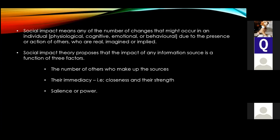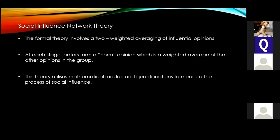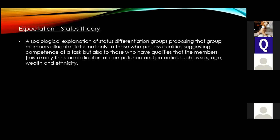Social impact theory proposes that the impact of any information source is a function of three factors: the number of others who make up the sources, the immediacy (closeness) of those sources, and the strength and salience of their power. Social influence network theory involves a two-weighted averaging of influential opinions — actors form a normal opinion that is a weighted average of others' opinions in the group, using mathematical models and quantification to measure the process of social influence.